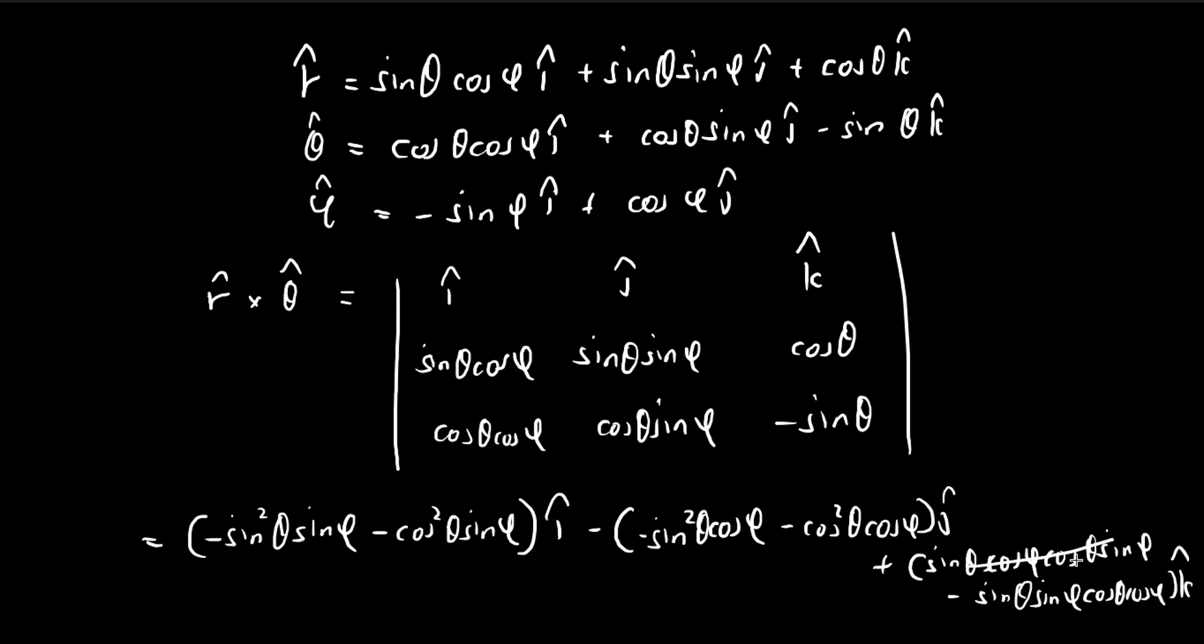And obviously, this is equal to zero. Again, you can factorize the sine phi term out. You have sine square theta plus cosine square theta, which is just equal to 1. So you get negative sine phi i. And then we'll just put the negative on the inside. Once again, you can pull out the cosine phi. You get sine square theta plus cosine square theta, which is just equal to 1. So you get cosine phi j. And you see that matching this with the result that we have before, this is precisely equal to the phi vector as we would expect it to be.